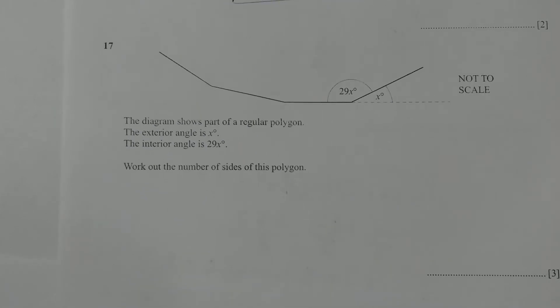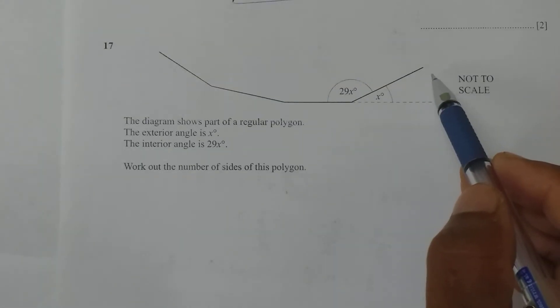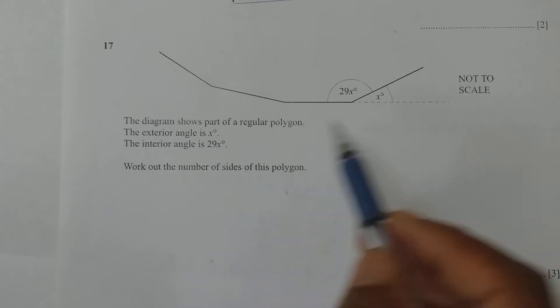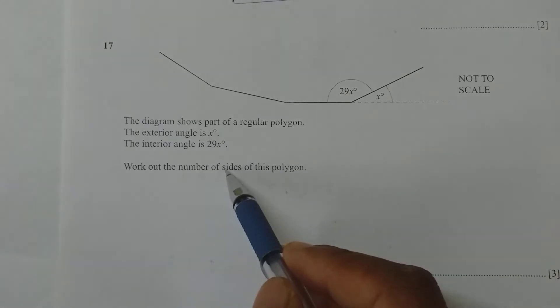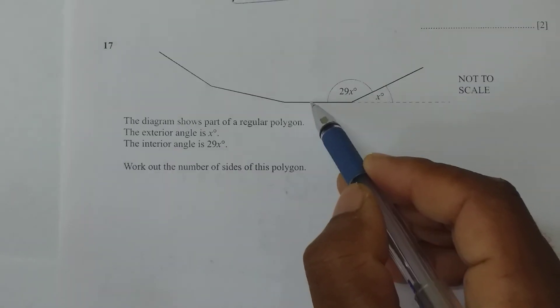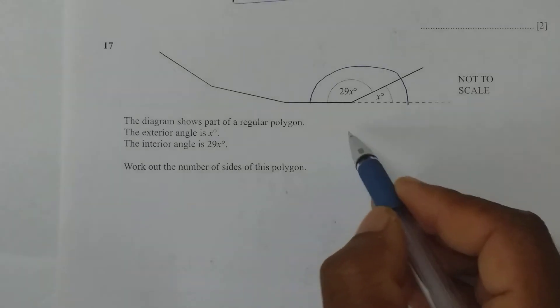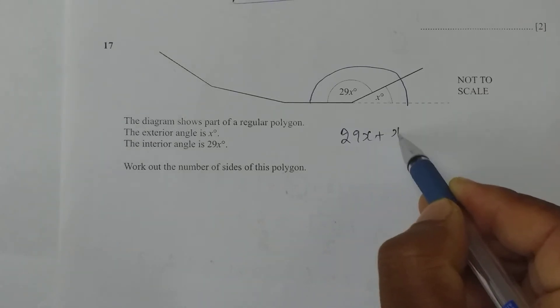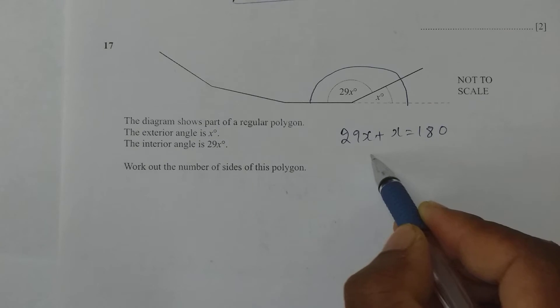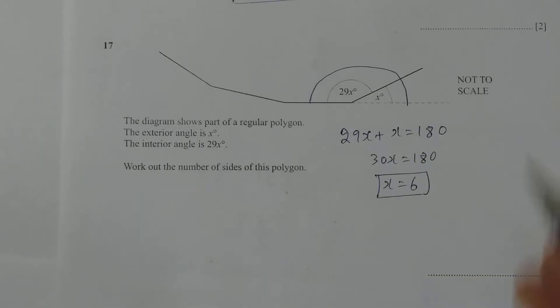Next one. The diagram shows part of a regular polygon. The exterior angle is X. Interior angle is 29X. Work out the number of sides of this polygon. How much will the entire angle be? The entire angle will be 180, straight line. So 30X equals 180, therefore X equals 6.